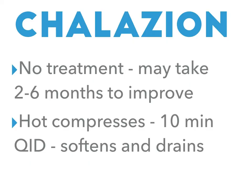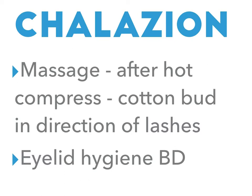What's the management of chalazion? You have a couple of options. You can do the no-treatment approach, and it may take two to six months to improve. You can do hot compresses — ten minutes a day, four times a day — with the idea of softening the granuloma and allowing it to drain. After hot compresses, you can do massage using a clean finger or a cotton bud in the direction of the lashes to try and promote excretion.